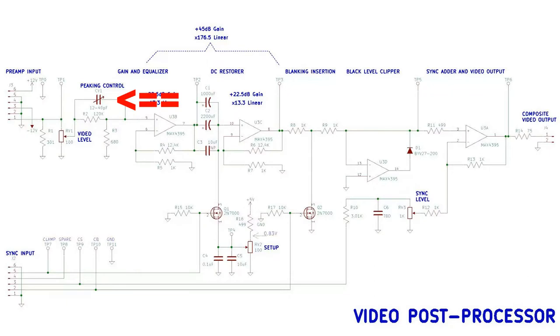Let's look closely at this coupling network going from the video level control into the first video amplifier. Ignoring the capacitor, just imagine it's not there.